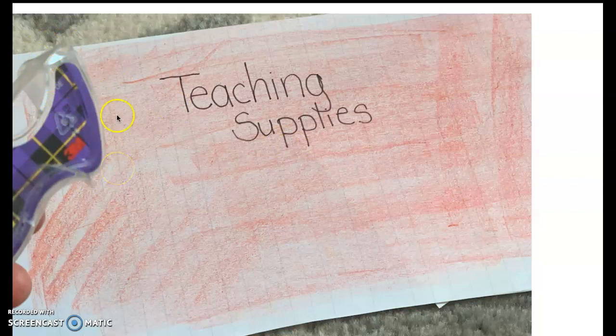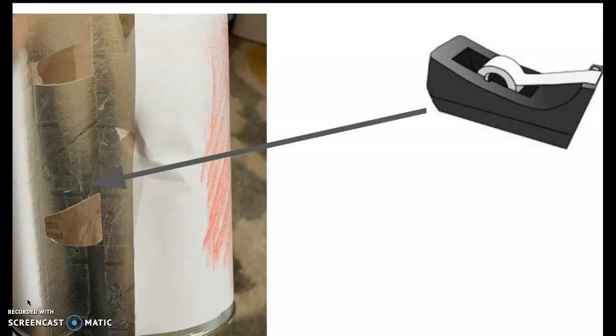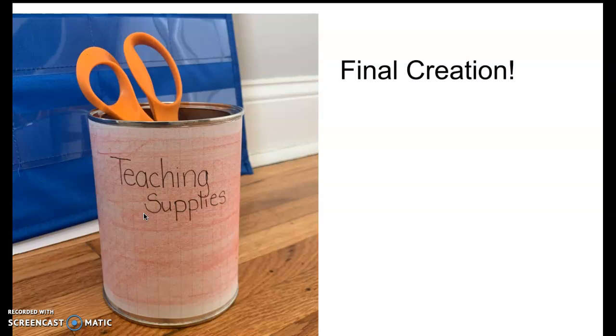Then I grabbed my tape because I knew I was going to have to put tape on one side of the paper. I put one piece of tape on the side of the paper and taped that side down to the container. Then I wrapped the rest of the paper around and put one final piece of tape to make sure that it all came together.